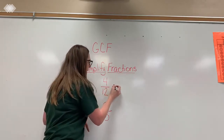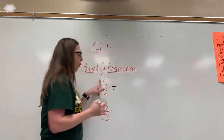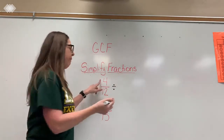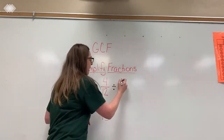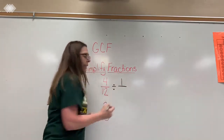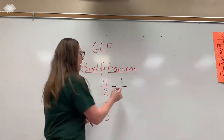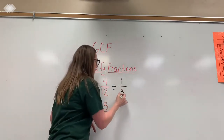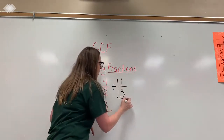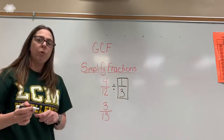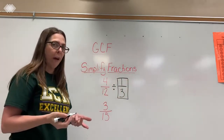So if I divide 4 by 4 — 4 divided by 4 — I get a 1. And if I divide 12 by 4, I get a 3. So the simplest form of 4 twelfths would be one-third.